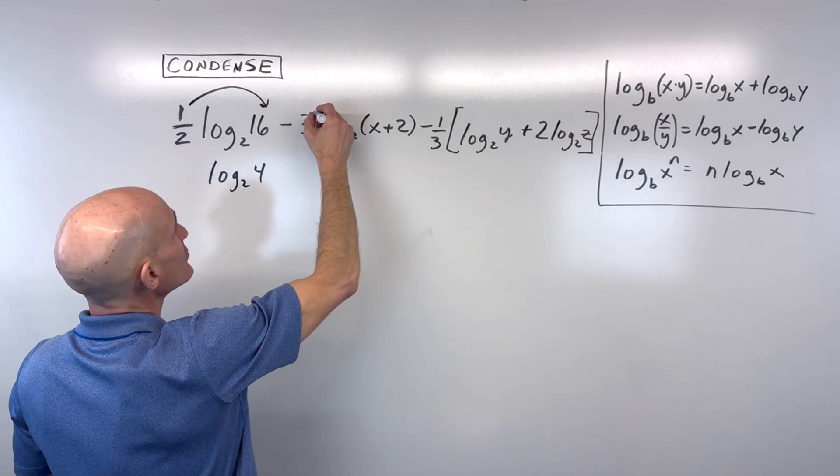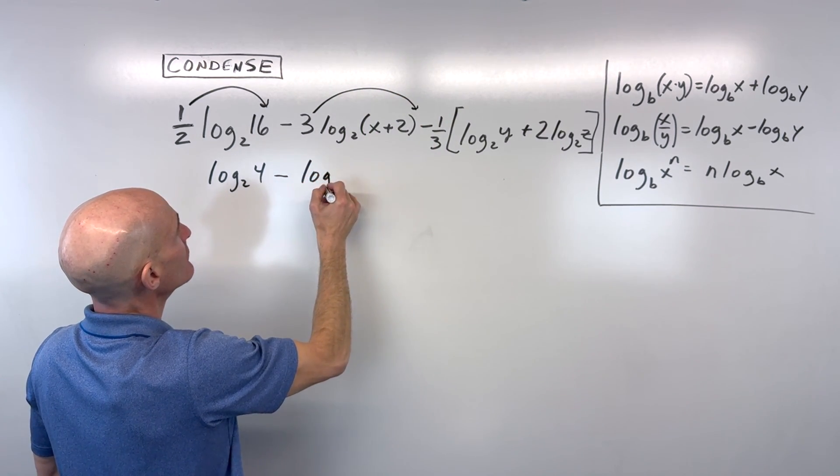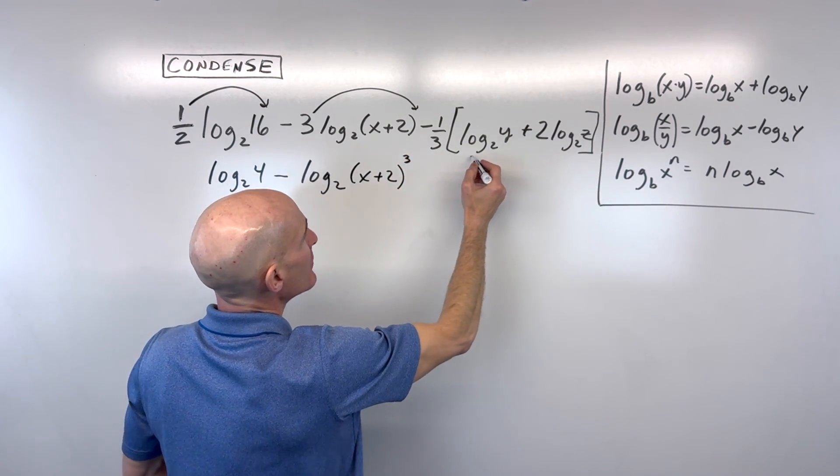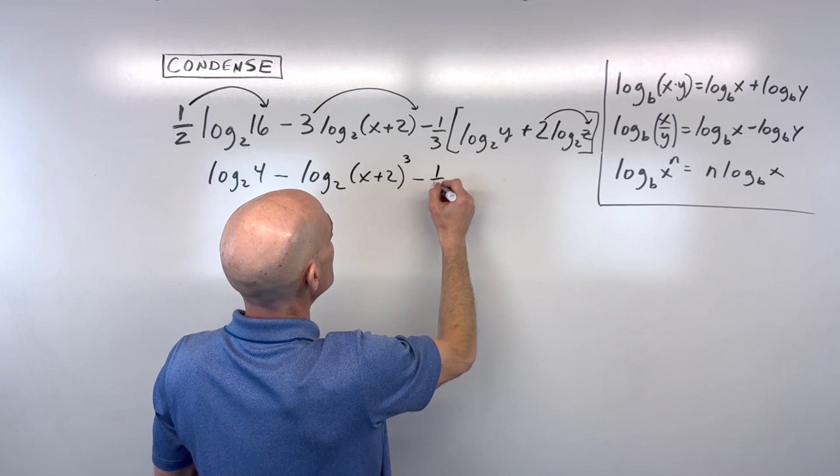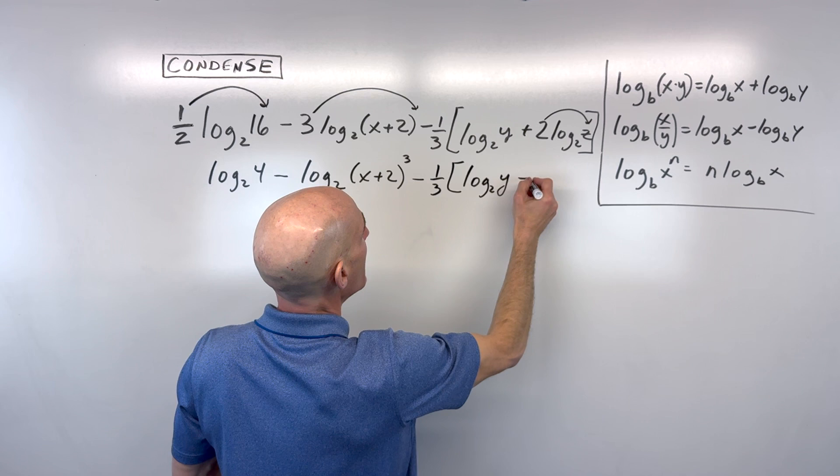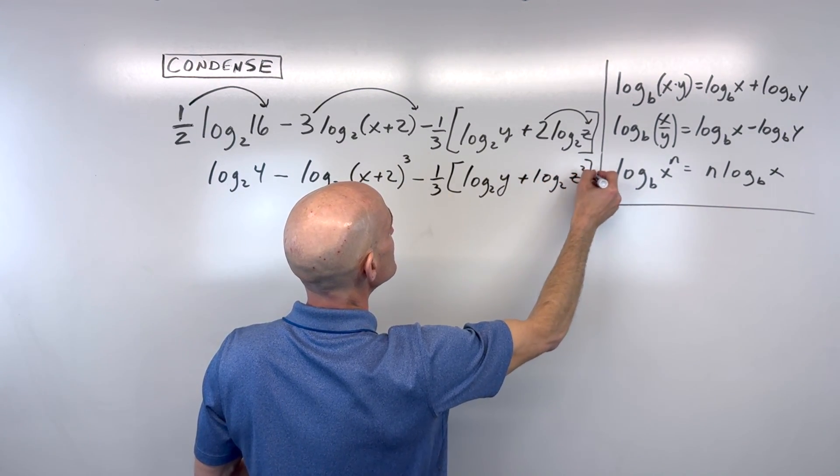This 3 I'm going to bring up as a power. So that's going to be minus log base 2 of x plus 2 cubed. Here I'm going to work on the inside. I'm going to bring this 2 up as a power. So that's going to be minus one-third log base 2 of y plus log base 2 of z squared.